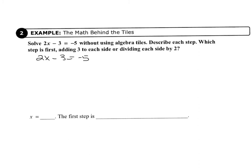And then your second step, just like we did with the algebra tiles, would be to add 3 to each side. So we would have 2x minus 3 plus 3 equals negative 5 plus 3.